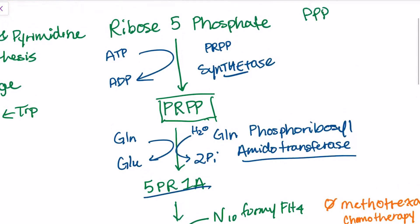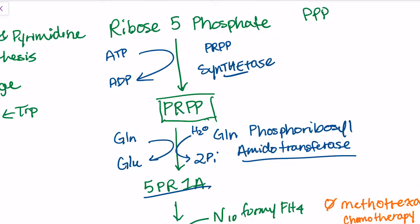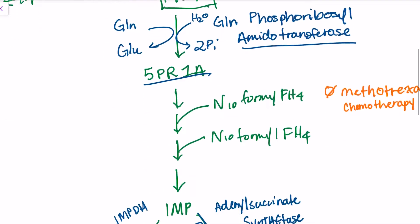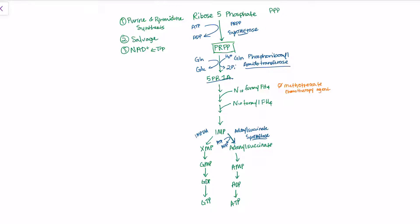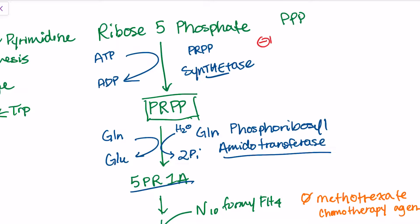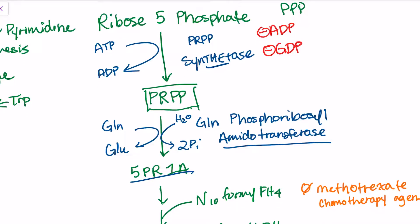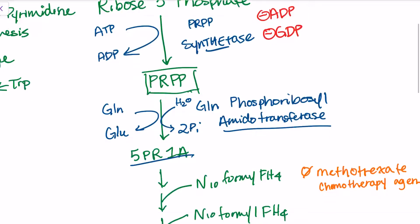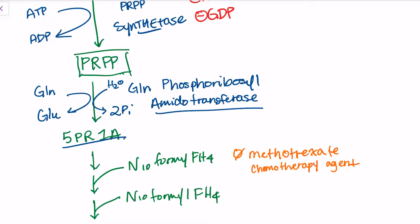Starting with PRPP synthetase, this one is negatively regulated by some of our products. PRPP synthetase is negatively regulated by ADP and GDP. It's common for products to go back and allosterically inhibit enzymes. Glutamine-phosphoribosyl-amidotransferase is similar, but inhibited by AMP, ADP, ATP, and also GMP, GDP, and GTP.